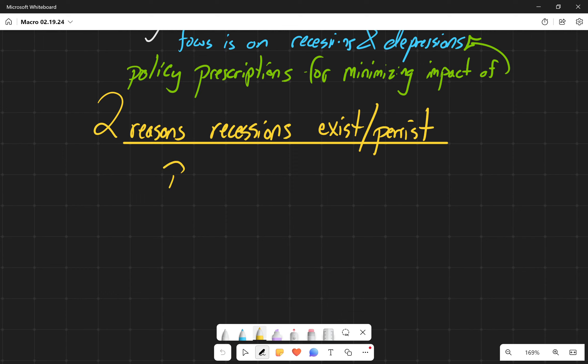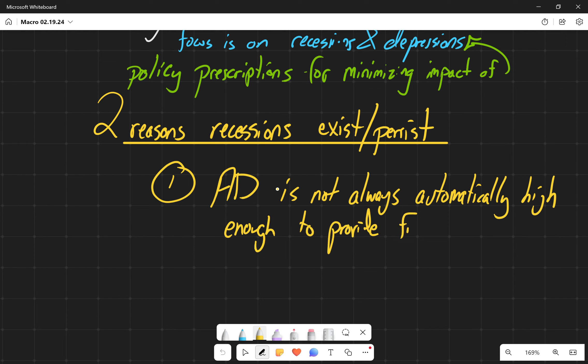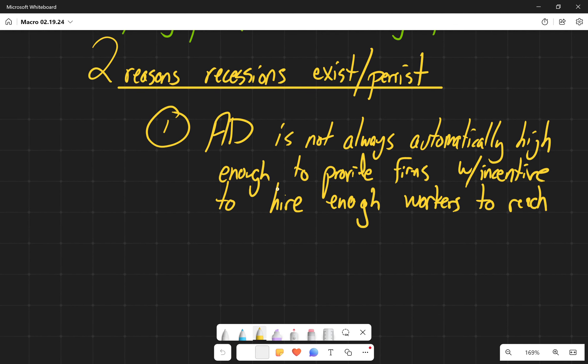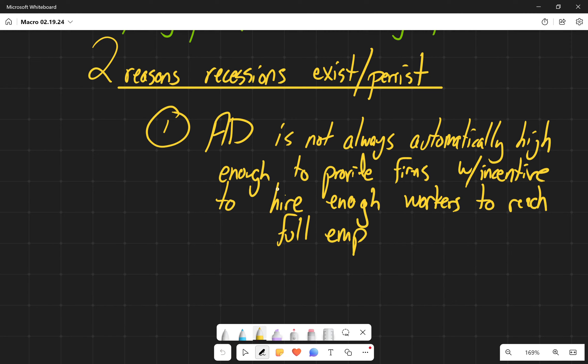So the first is that aggregate demand is not always automatically high enough to provide firms with an incentive to hire enough workers to achieve full employment. And specifically to reach full employment, which as macroeconomists we care about, right?